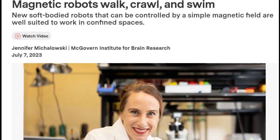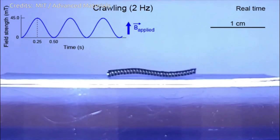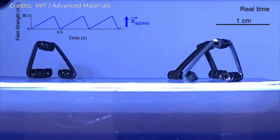MIT scientists have developed tiny soft-bodied robots that can be controlled with a big magnet. The robots, formed from rubbery magnetic spirals, can be programmed to walk, crawl, and swim—all in response to a simple, easy-to-apply magnetic field.